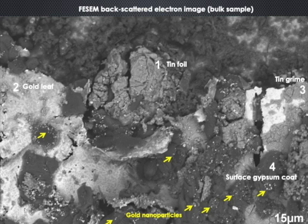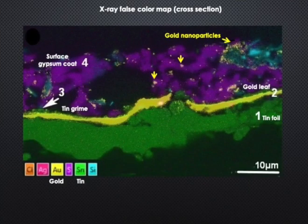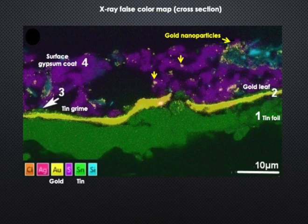Gold nanoparticles appear randomly embedded within this whitish coat. The degraded tin foil contains romarchite, a stannous oxide mineral. The grime has a composition similar to the tin foil, and the surface coat is made of gypsum with minor amounts of silicates. Gold nanoparticles are randomly dispersed within the sample, though mostly deposited onto silicates in the gypsum coat.